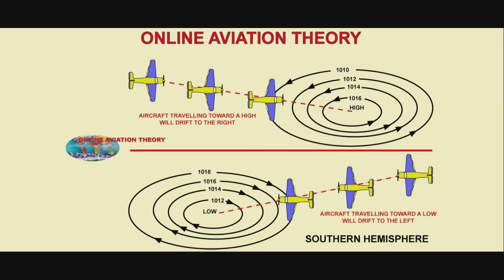If you put this into a practical aviation scenario, if an aircraft is flying toward a high-pressure system, the wind will be from the left and the aircraft will drift right.